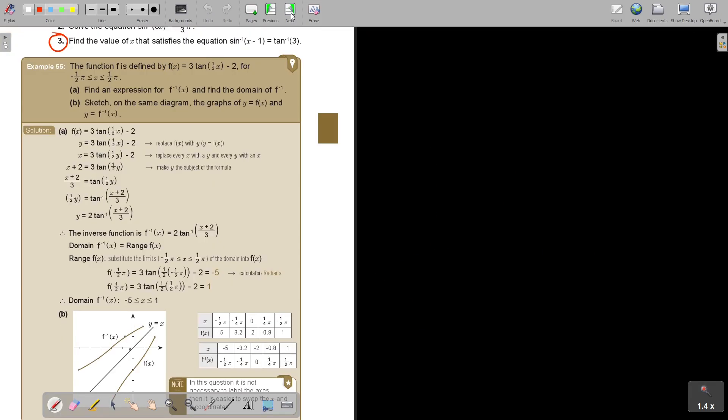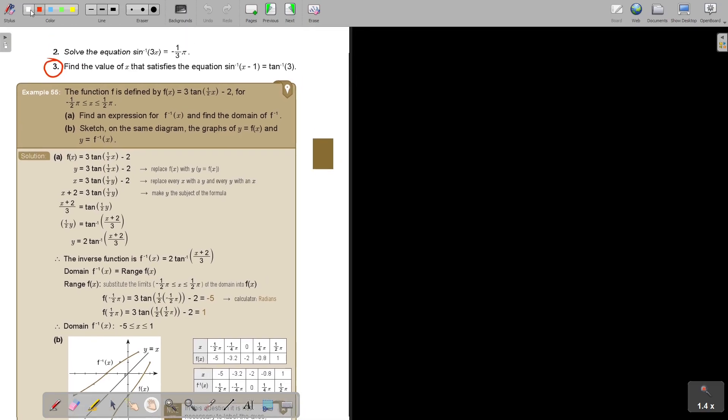Let's do number 3. It looks more difficult than it is. Number 3, find the values of x that satisfy the equation. It's sin minus 1 of x minus 1 equals tan minus 1 of 3. Because this one, you can basically press it on the calculator because it's not the unknown. If you press shift tan and you press 3, I'm going to get sin minus 1 of x minus 1, and make it to at least 3 decimal places, it's 71.565, just for accuracy.